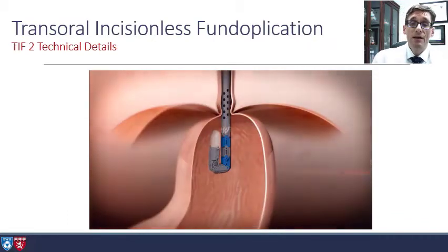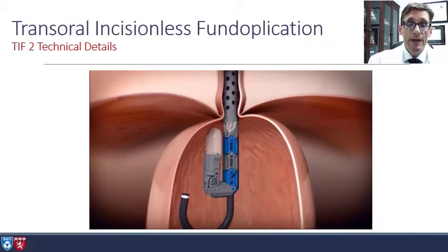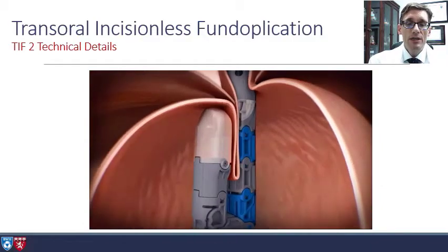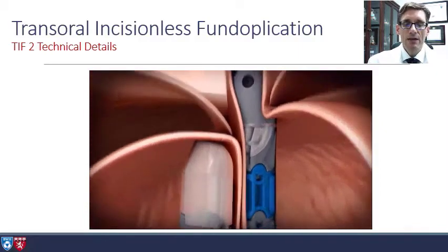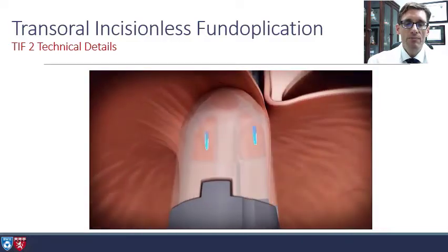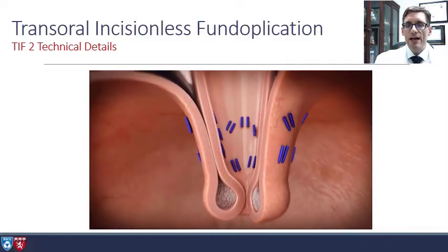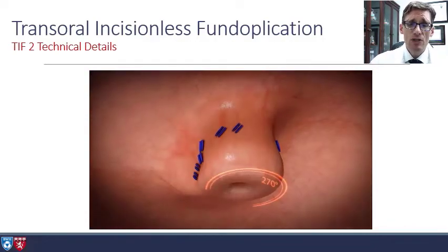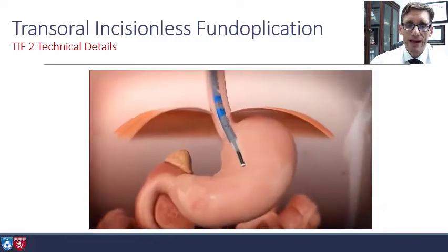However, we do have a couple of devices that are being successfully used currently. This procedure is called the TIF-2. The device is placed and positioned in a retroflex orientation, then a helix grabs tissue at the GEJ and pulls it down into the device. The device is twisted and H fasteners are deployed, resulting in fibrosis and scarring producing a rather permanent 270-degree change.